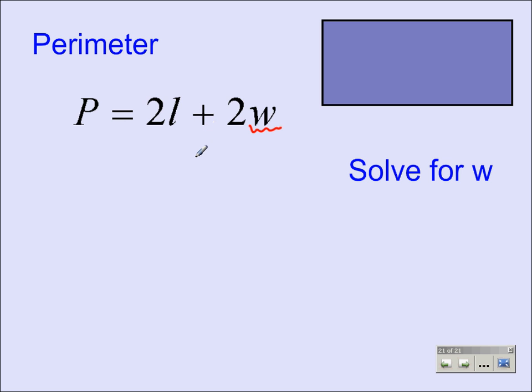Let's take this one step at a time and apply our multi-step equation methods to solve this. The opposite of adding 2l would be subtracting 2l. So let's subtract 2l from both sides and start to simplify. We'll bring that down so we have perimeter minus twice the length equals twice the width.